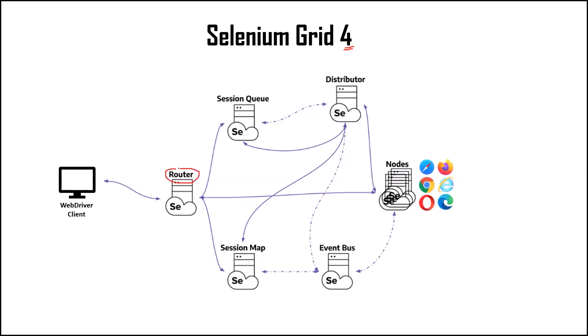The very first component is the router. Router is the entry point of Selenium Grid. When we execute our WebDriver script, the WebDriver client creates a connection with the Selenium Grid, or we can say the hub of the Selenium Grid. All the requests coming from the WebDriver client fall through this router. The responsibility of the router is to receive all external requests and route them to the correct component.